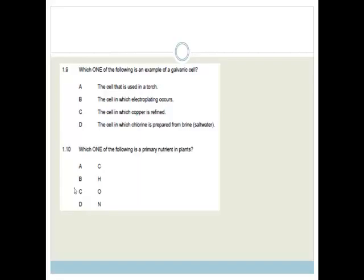Right. Now let's do some chemistry questions. It says, which one of the following is an example of a galvanic cell? Now a galvanic cell is a voltaic cell. And a voltaic cell is one that converts chemical energy to electrical energy. Not the other way around. So the cell that is used in a torch is the correct answer. Not one where electroplating occurs or where copper is refined or in which chlorine is prepared from brine. The correct answer for galvanic cell is the cell that is used in a torch.